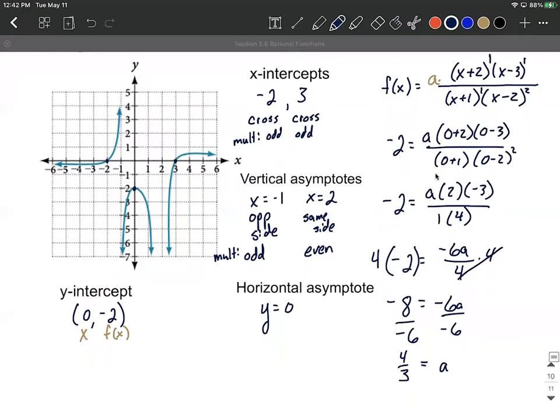So our function, write it down here, is simply we need to take this value of a, go back to the function we created here and I'm going to plug it in. I'm going to put the 4 in the numerator and the 3 in the denominator. So our function is going to turn out being 4 multiplied by the quantity (x plus 2) multiplied by the quantity (x minus 3) over, remember I'm putting the 3 in the denominator, (x plus 1) times quantity (x minus 2) squared. And there we have our function that would produce this graph based on all the information we collected.